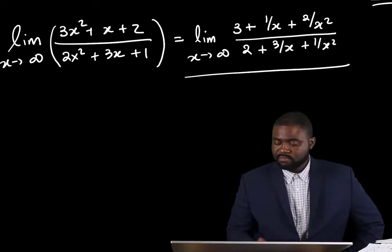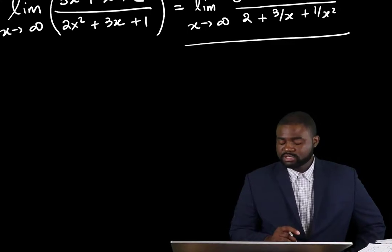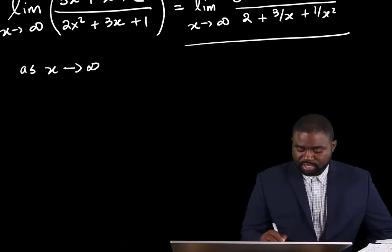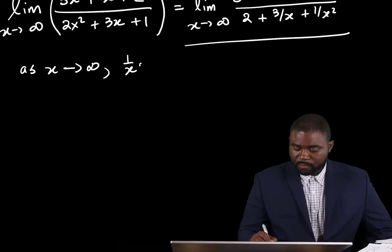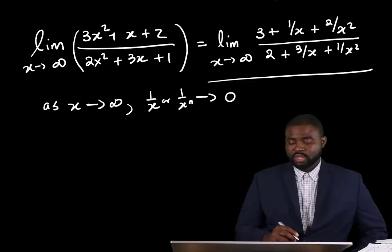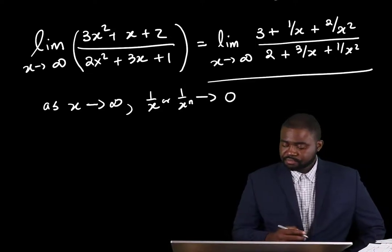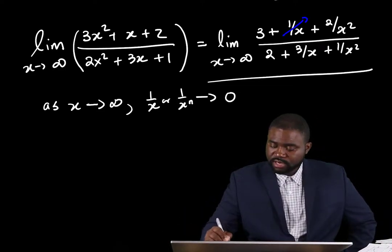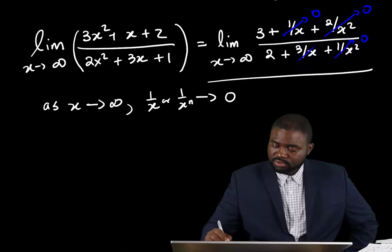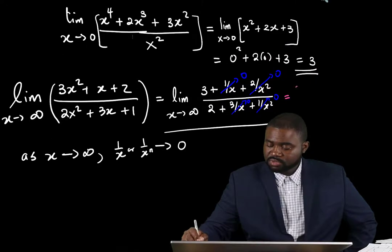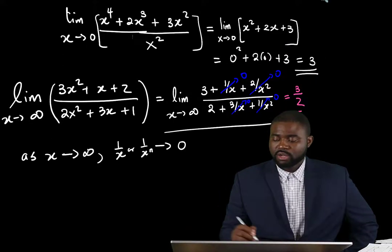The reason for doing this is because as x approaches infinity, 1 over x and 1 over x raised to the power n approaches 0. This is really critical. This means that the terms 1 over x, 2 over x squared, 3 over x, and 1 over x squared all become 0. And if we simplify, this becomes equal to 3 over 2, and that will be our answer.